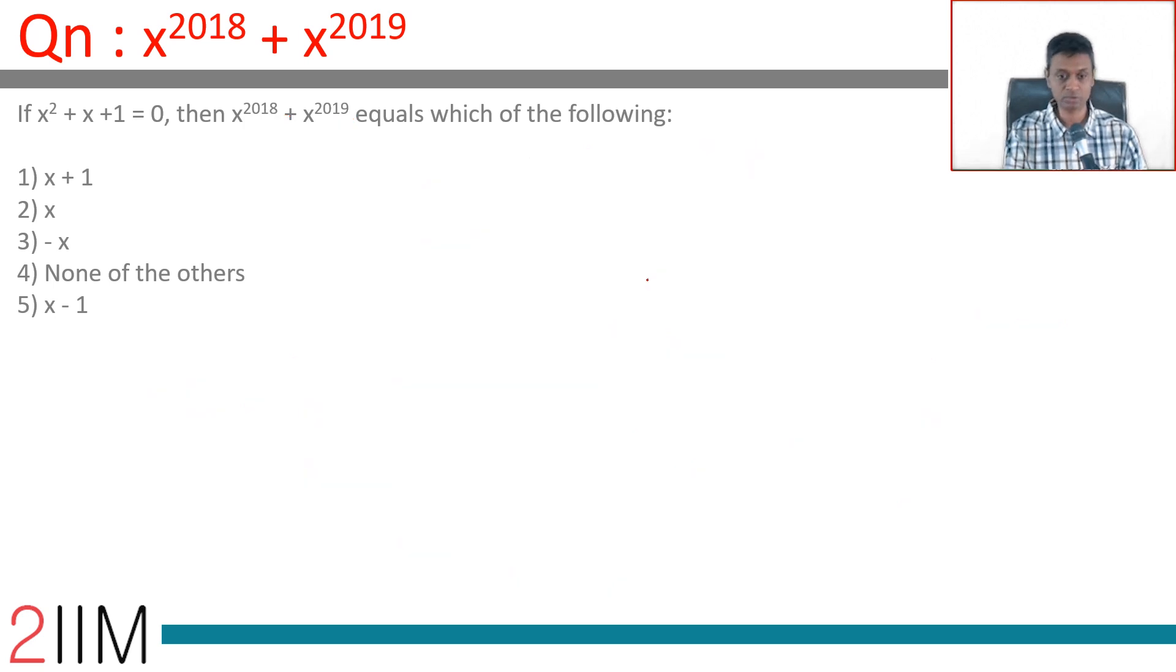Wonderful. So this term is 1. x^2019 = x³ to some integer, which is 1. x^2018 = x^2016 × x². Since 2016 is a multiple of 3, this equals 1 × x² = x².